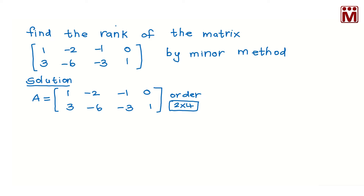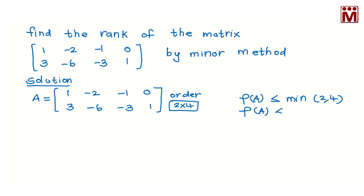The solution: take the matrix A of order 2 by 4 — 2 rows, 4 columns. The rank of matrix A is less than or equal to minimum of 2 and 4. The minimum value of 2 and 4 is 2. So, rank of A is less than or equal to 2.